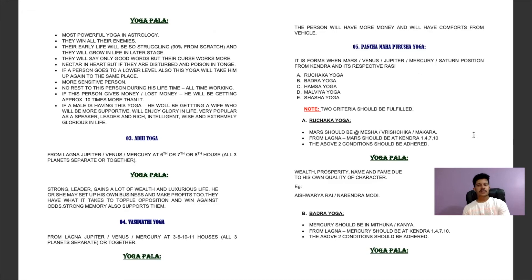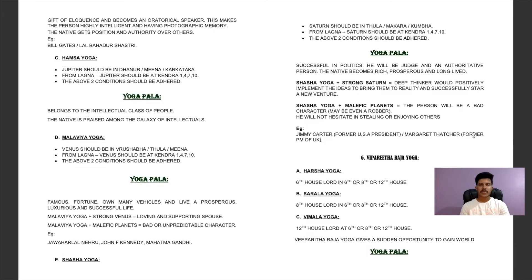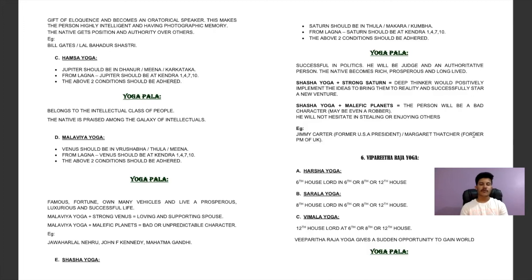Bhadra Yoga: Mercury should be in Gemini or Virgo, and Mercury should be in a Kendra (1st, 4th, 7th, or 10th) from the Lagna — both conditions must be met. Yoga phala: gift of eloquence, the person becomes an oratorical speaker, highly intelligent with photographic memory, and gains position and authority over others. Example: Lal Bahadur Shastri. Karma matters most. Hamsa Yoga: Jupiter should be in Sagittarius, Pisces, or Cancer, and Jupiter should be in a Kendra — both conditions must be met. Yoga phala: belongs to the intellectual class of people, praised among the galaxy of intellectuals.